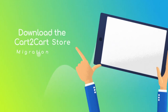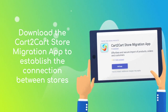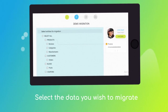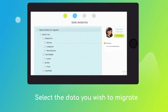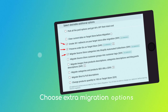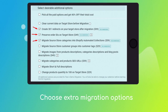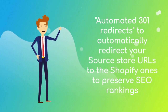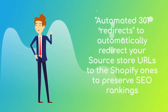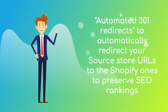Download the Cart2Cart store migration app to enable the connection with your Shopify. Click the Choose Entities button to select the data types you'd like to migrate to Shopify, and the additional migration options to refine your migration. The recommended options are Automated 301 redirects — it will help you to automatically redirect your source store URLs to the Shopify ones to preserve SEO rankings.